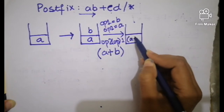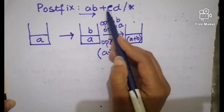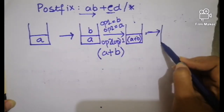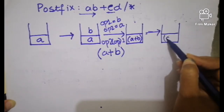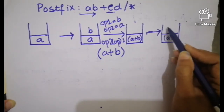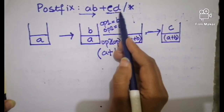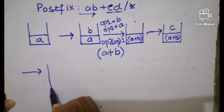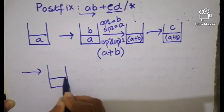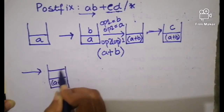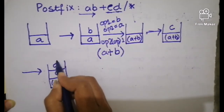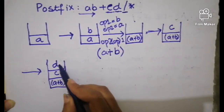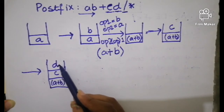The next one is again an operand, so when we have an operand we just push it into the stack. The next one is also an operand, so without popping anything we push it into the stack. We already have c in the stack, and we now push d as the next operand.